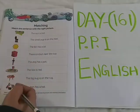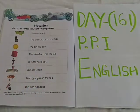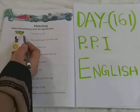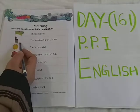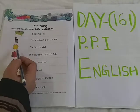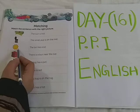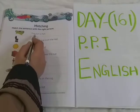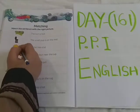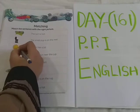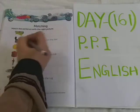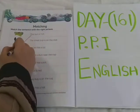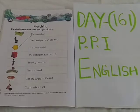Where can you see the sun? Tell me. Is this a sun? No. Is this a sun? No. Is this a sun? Yes. So what is the sentence? The sun is hot. So here you can see the hot sun. Match the sentence with the picture.